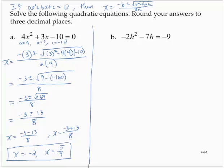Now exercise b: we have negative 2h squared minus 7h is equal to negative 9. This is quadratic, but it's not in standard form. So what we'll do first is add 9 to both sides, giving us negative 2h squared minus 7h plus 9 is equal to 0. Now we will apply the quadratic formula.